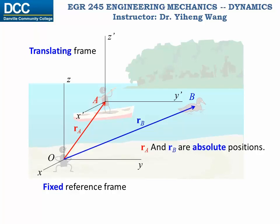So in the eyes of this person on the boat, the position of the duck is represented by a position vector originated from him, position vector RB/A, which means the relative position of B relative to the observer A. We learned vector addition already, and we learned about the parallelogram law and triangle rule.